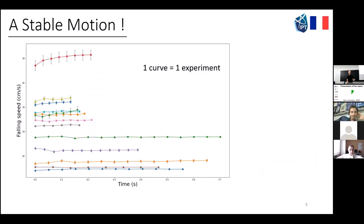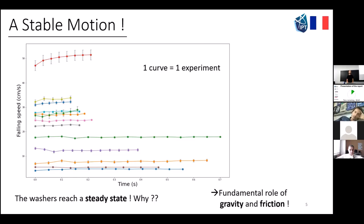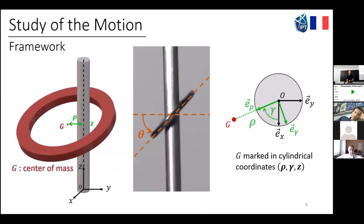Let's right away answer the first question: yes, the motion is stable. As you can see here, one curve corresponds to one experiment — one washer and one rod. For different experiments, we have a constant falling velocity as a function of time, so the washers reach a steady state. But the real question is why, and we will investigate the fundamental role of gravity and friction.